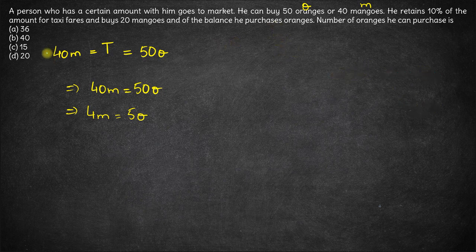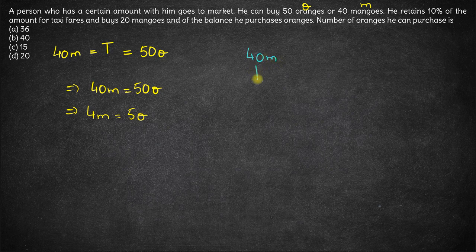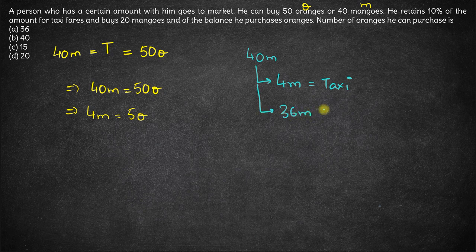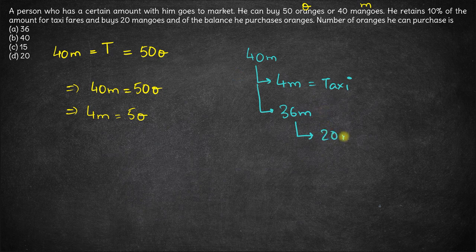Initially he has 40M rupees with him. Out of this 40M, he keeps 10%, that means 4M for taxi, and the amount remaining is 40M minus 4M, which is 36M. This is the amount remaining. Now with this amount, he first buys 20 mangoes. Since each mango costs M rupees, 20 mangoes will cost 20M rupees. The amount remaining with him now is 16M.